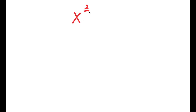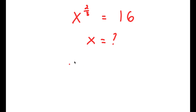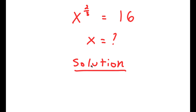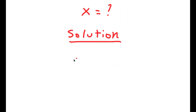In this equation, I have x to the power of 2 over 3 is equal to 16. My only variable in this equation is x, so that's the variable I'm going to be solving for. For my solution, I'm going to first start by rewriting my equation down here so I have more space: x to the power of 2 over 3 is equal to 16.